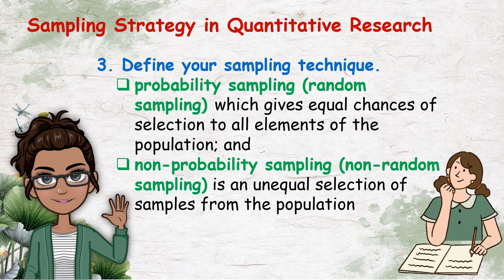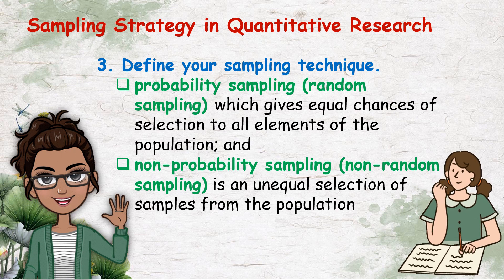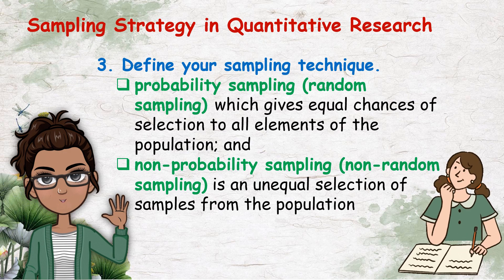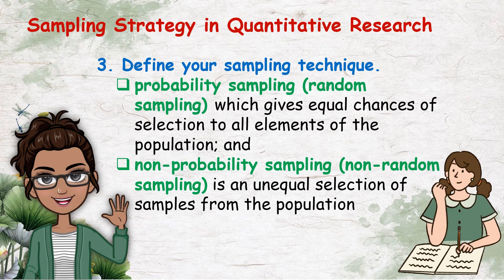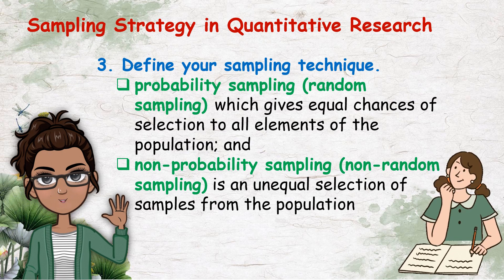There are two sampling techniques you will use to select sample from your target population. The sampling technique that's right for you depends on the nature and objectives of your project. So sampling techniques is divided into two types: the probability sampling, or the random sampling, which gives equal chances of selection to all elements of the population, and non-probability sampling, or the non-random sampling, is an unequal selection of samples from the population.